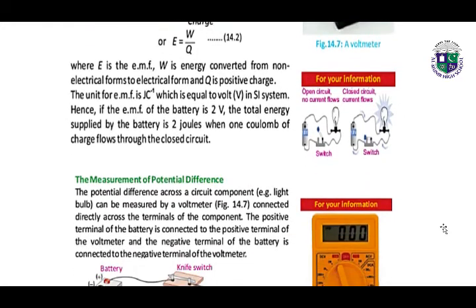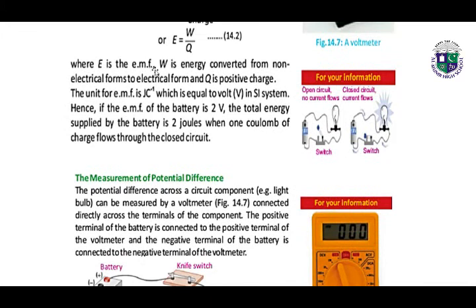Where E is electromotive force, W is energy converted from non-electrical forms to electrical form, and Q is positive charge. The unit is joules per coulomb, which is equal to volt V in the SI system.